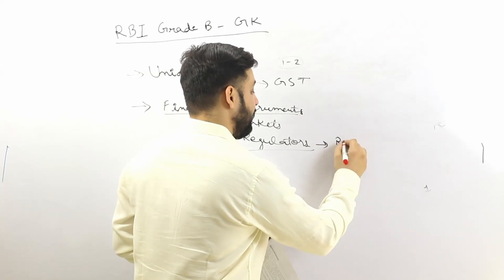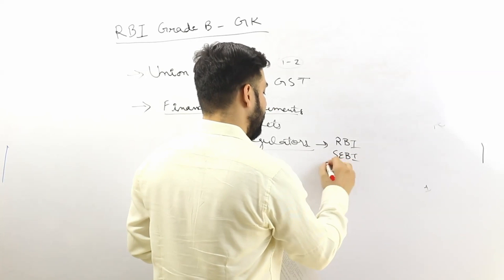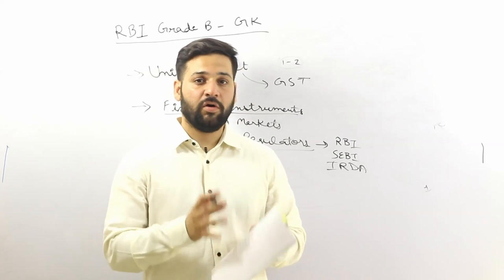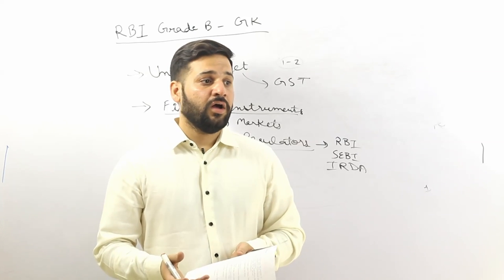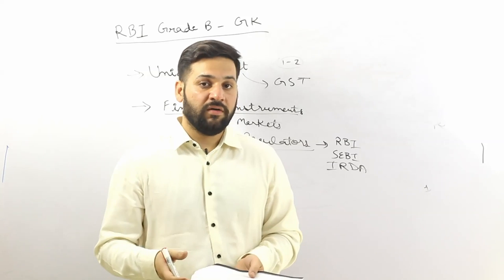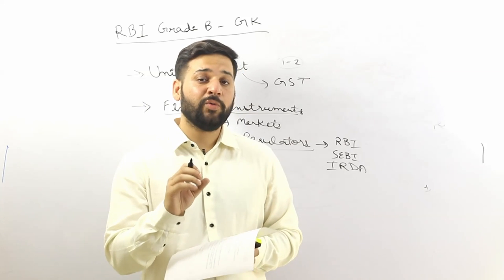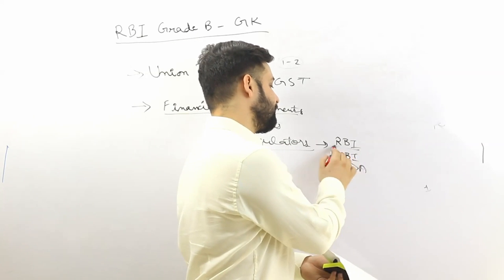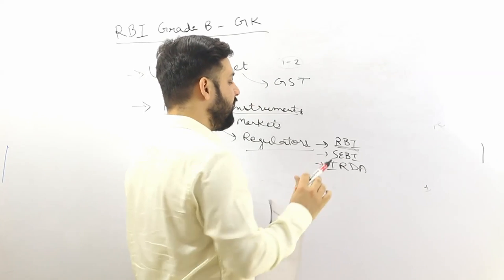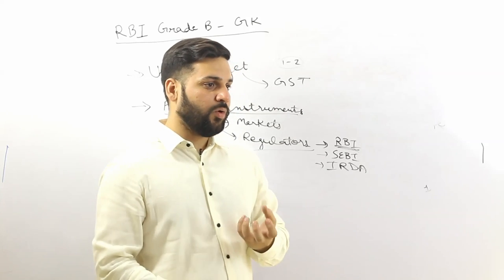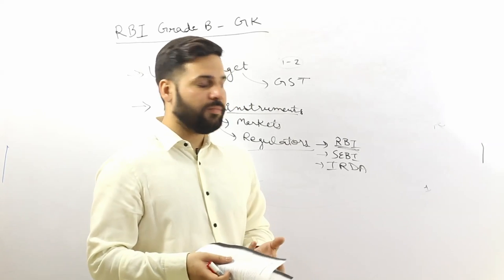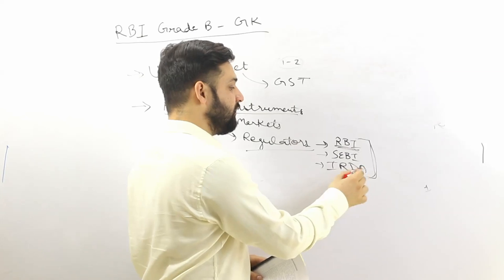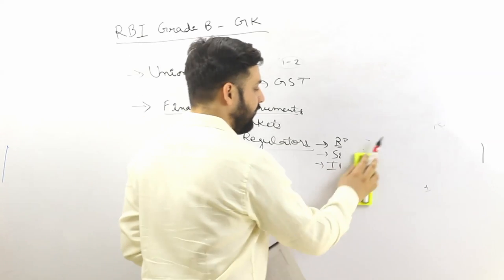Then you need to read about financial regulators — this is very, very important because RBI is itself a financial regulator. Read about RBI, SEBI, and IRDA. For RBI specifically, cover its powers, authorities, functions, organizational structure, the Governor, the history, and the location of offices and Mints. For SEBI and IRDA, understand their roles in the economy, how they regulate financial markets, their functions, and the relevant acts such as the Banking Regulation Act.